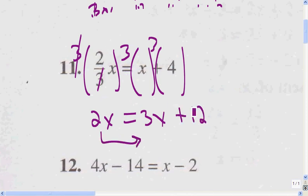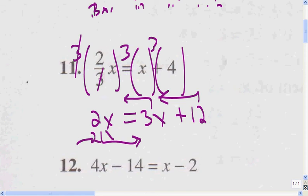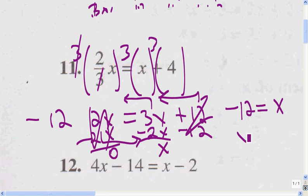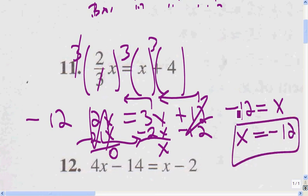I'm going to move the 2x over here and the 12 over here, because I always want to try to get a positive x. If I moved the 3x over here, that would give me a negative answer — that's why I'm moving the 2x. So I subtract 2x from both sides, giving me 0 on one side and x on the other. I subtract 12 from both sides, giving me negative 12. So x equals negative 12, and negative 12 equals x — same thing.